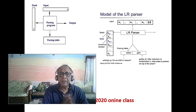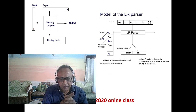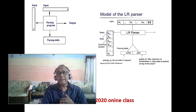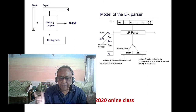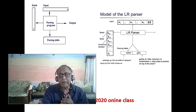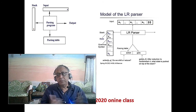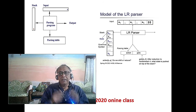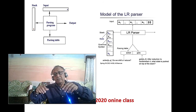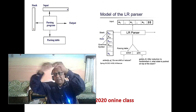Another usefulness of stack is in formal language and automata theory — that is pushdown automata. That is a fantastic use of stack. Whenever you have a^n b^n recognition, you think of a stack: you put 'a' into it and whenever 'b' comes you pop 'a', and if it matches you throw it away.